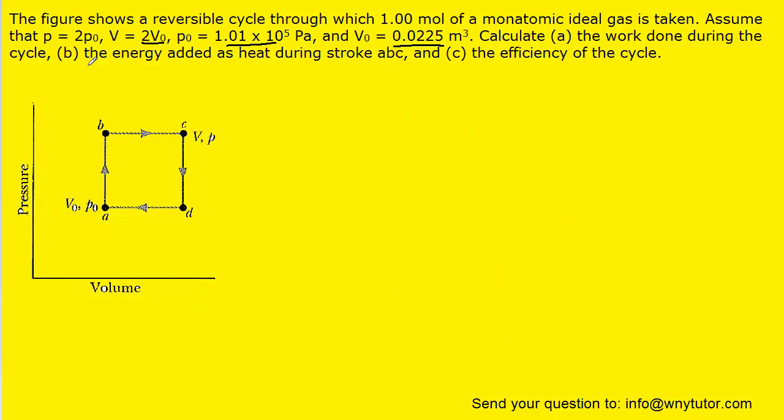Now on to part B, which asks us to calculate the energy added as heat during stroke ABC. So stroke ABC would be from here to here and then here to here. Now what we want to notice for the path A to B is that the volume isn't changing. As we move vertically up the pressure axis, the volume isn't changing. And so the heat added becomes equal to n times the molar specific heat at constant volume times the temperature change, which could be Tf minus Ti.